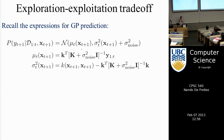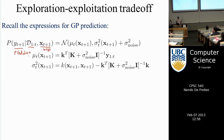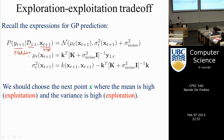From the previous class, we know the expressions for a Gaussian process. If we want to make a prediction — given a data set and a new test point — our prediction is Gaussian with two statistics: a mean and a variance. If you know the mean and the variance, you know everything about the prediction y. All we need in order to trade off exploration and exploitation is to know this mean and this variance.